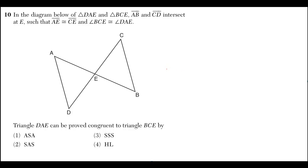The diagram below shows triangles DAE and BCE, where AB and CD intersect at E such that AE is congruent to CE, and angle BCE is congruent to angle DAE.